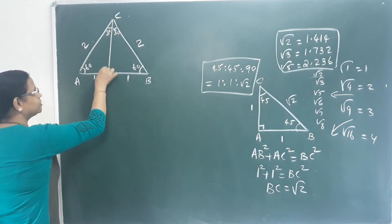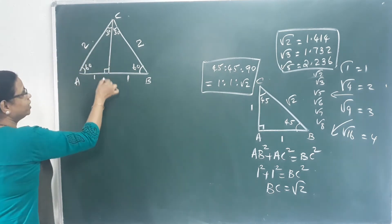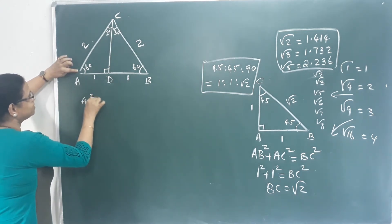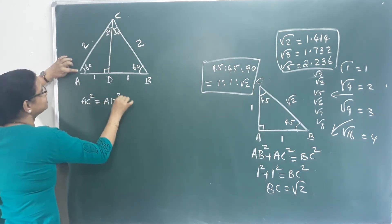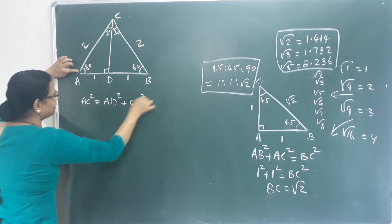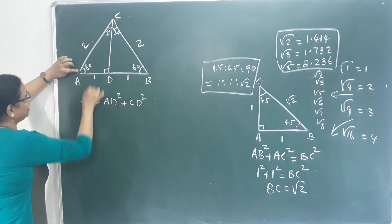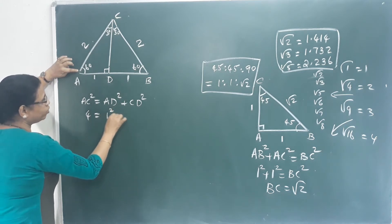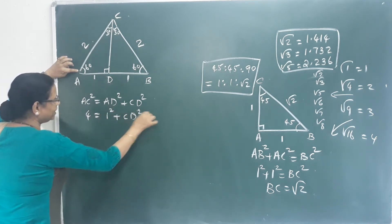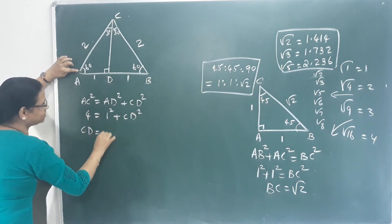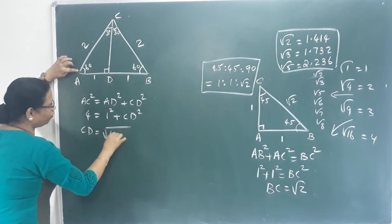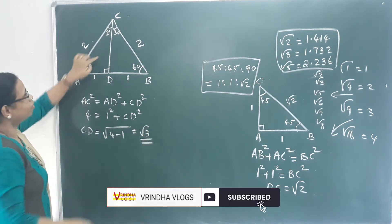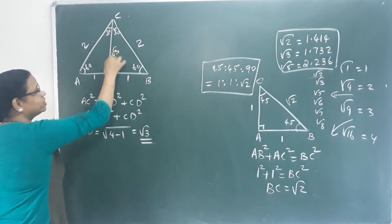We use the Pythagorean theorem. AC square is equal to AD square plus CD square. So AC square equals 1 square plus CD square. That means CD is equal to root of (4 minus 1), which is equal to root 3. Okay, this side is root 3.